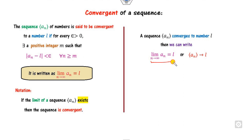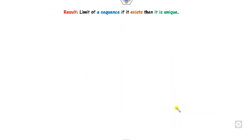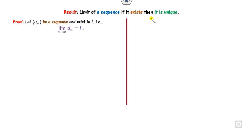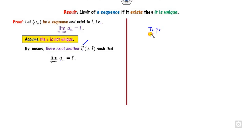We can write: limit n approaches infinity of a_n equals l, meaning the sequence converges to l. If no such l exists, the limit does not exist and the sequence is divergent or not convergent. Remember that whenever the limit of a sequence exists, it is always unique. To prove this: assume a_n is a sequence that converges to l. Your target is to prove it is unique, so assume the limit is not unique.